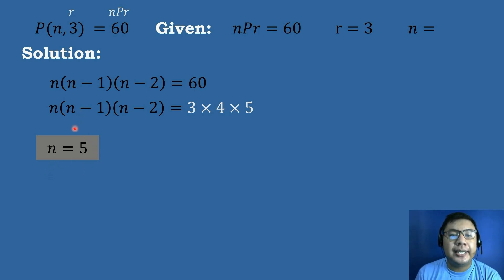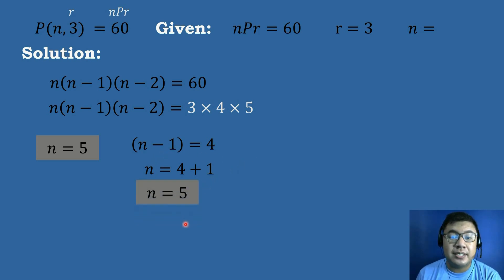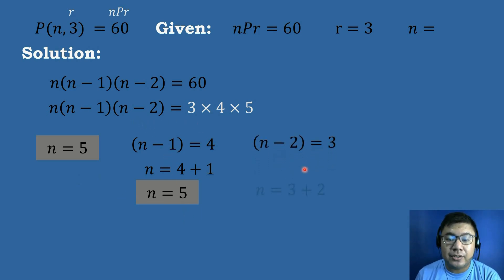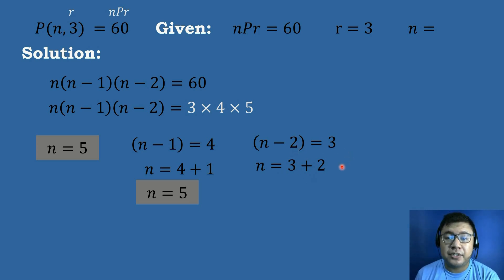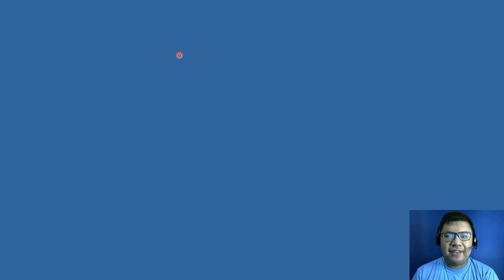To get the value of N, we equate N with the highest factor: N equals 5. Alternatively, equating N minus 1 by 4 gives N equals 5. Or equating N minus 2 by 3: N minus 2 equals 3, so N equals 3 plus 2, which is also 5. So these are the methods to compute for the value of N.